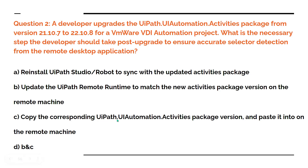Option C is: copy the corresponding UiPath.UIAutomation.Activities package — as shown in the previous video, you go to user profile dot nugget packages UiPath and find the package folder — and paste it onto the remote machine. Option D is B and C combined. Which is the right option?